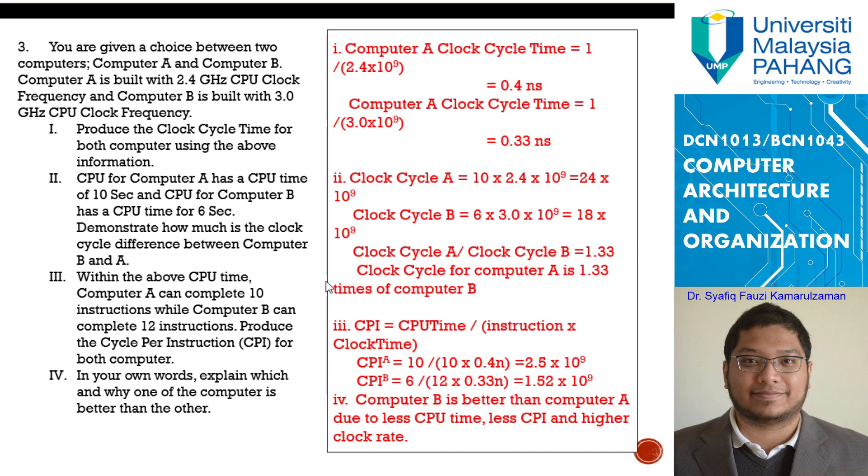Let's go ahead for the question number 3. You are given a choice between two computers, computer A and computer B. Computer A is built with 2.4 GHz CPU clock frequency, and computer B is built with 3.0 GHz CPU clock frequency. Let's start with the first question for question 3. Produce the clock cycle time for both computers using the above information. Clock cycle time means when it tick-tocks, how long it take? How long it take for it to tick and talk for one cycle?